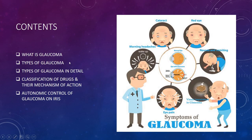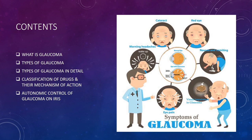This is the content slide. The contents include: what is glaucoma, types of glaucoma with pictorial depiction, classification of drugs and their mechanism of action, and how the autonomic control of glaucoma acts on the iris of the eye. On the right hand side, you can see a picture showing the symptoms of glaucoma, which include morning headaches, cataract, red eye, nausea or vomiting, visual impairment, and eye pain.